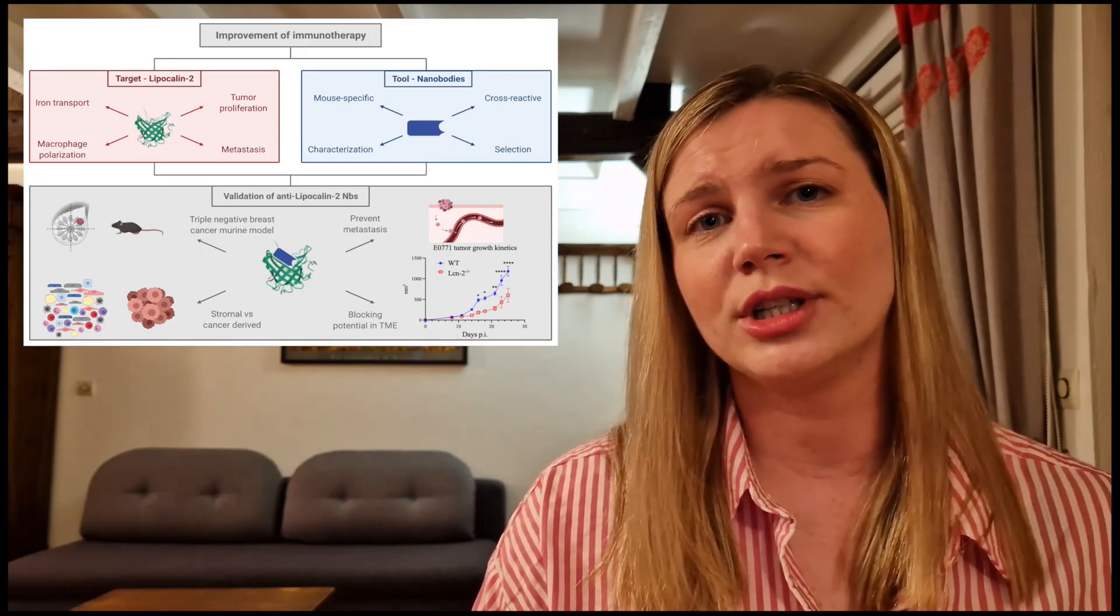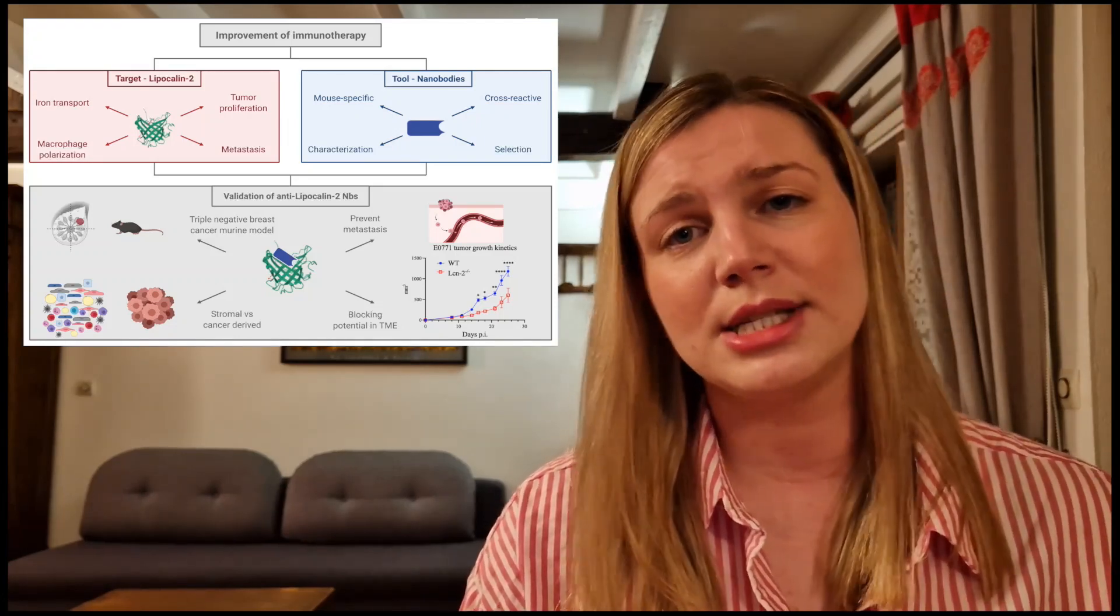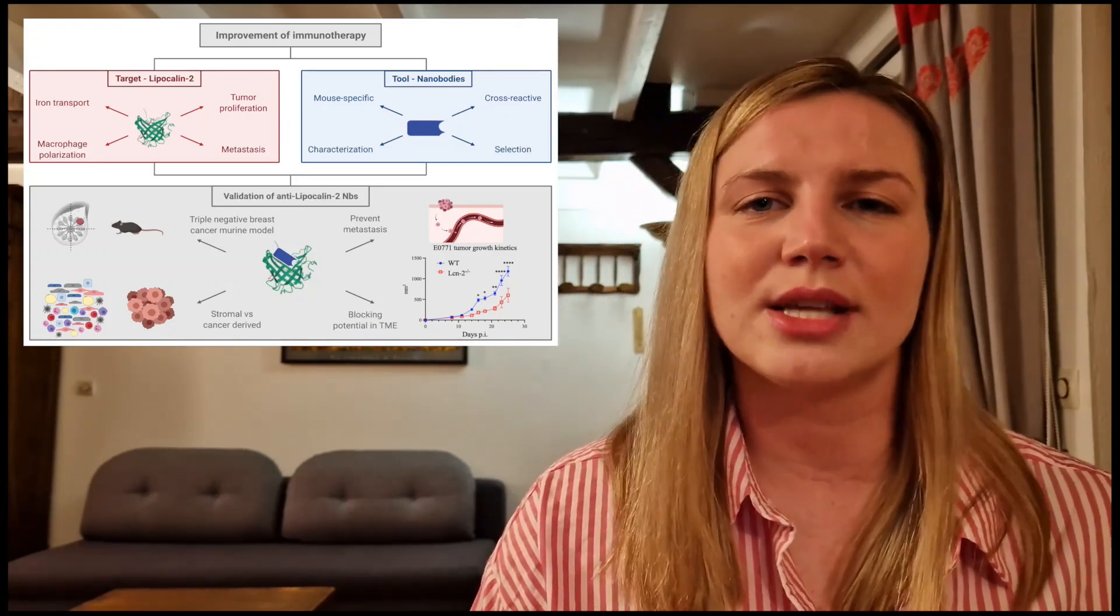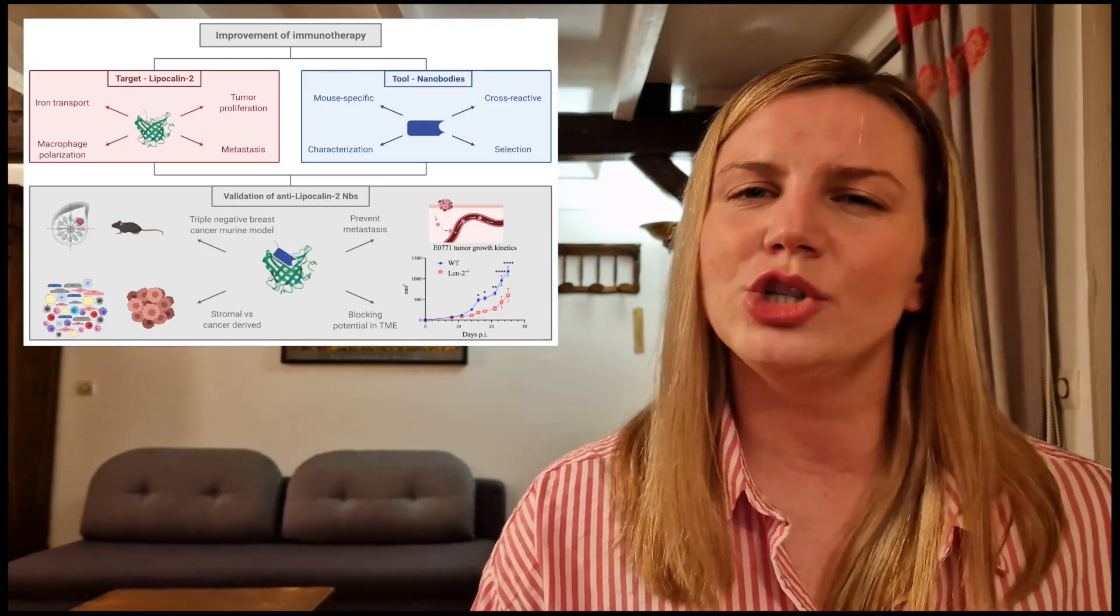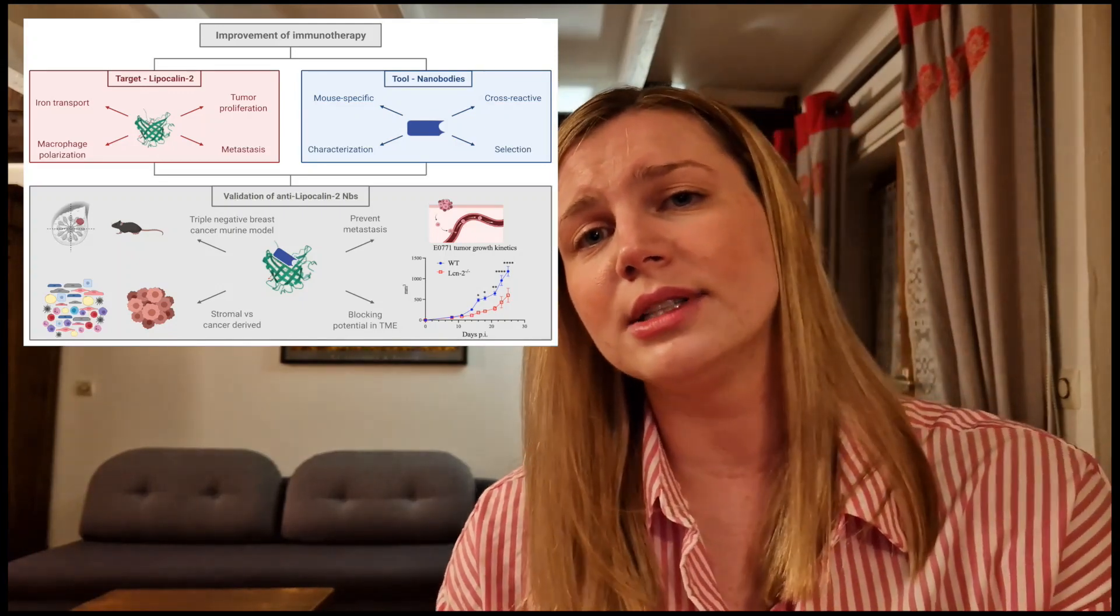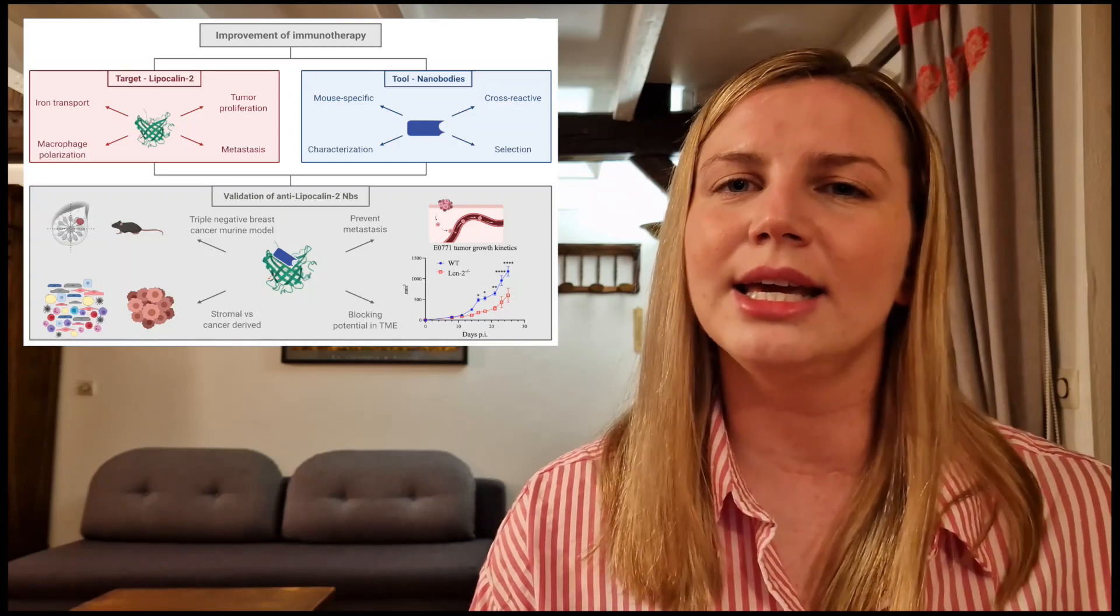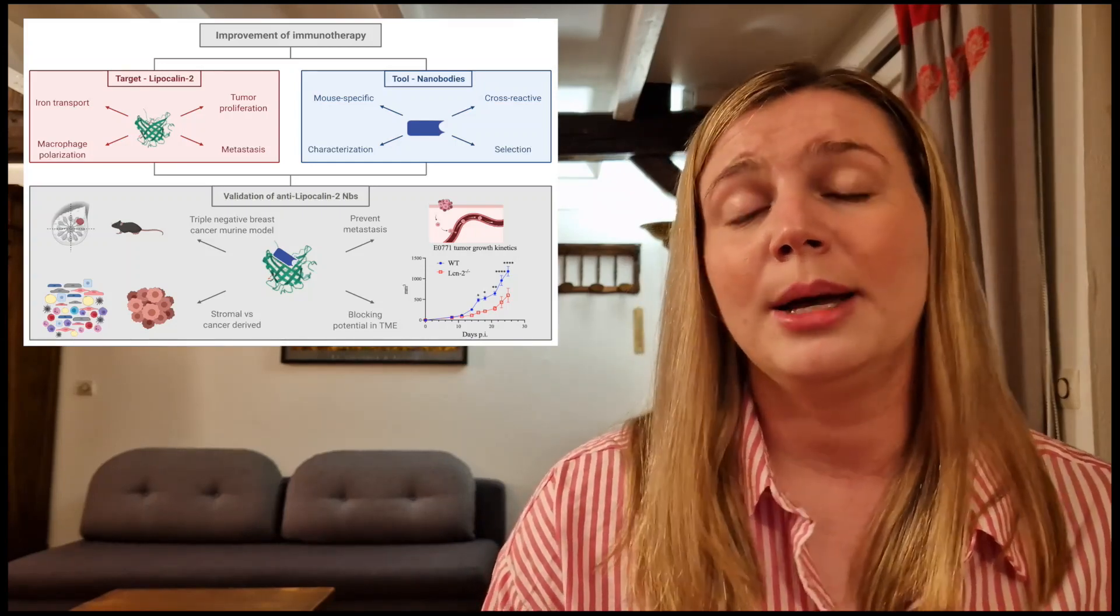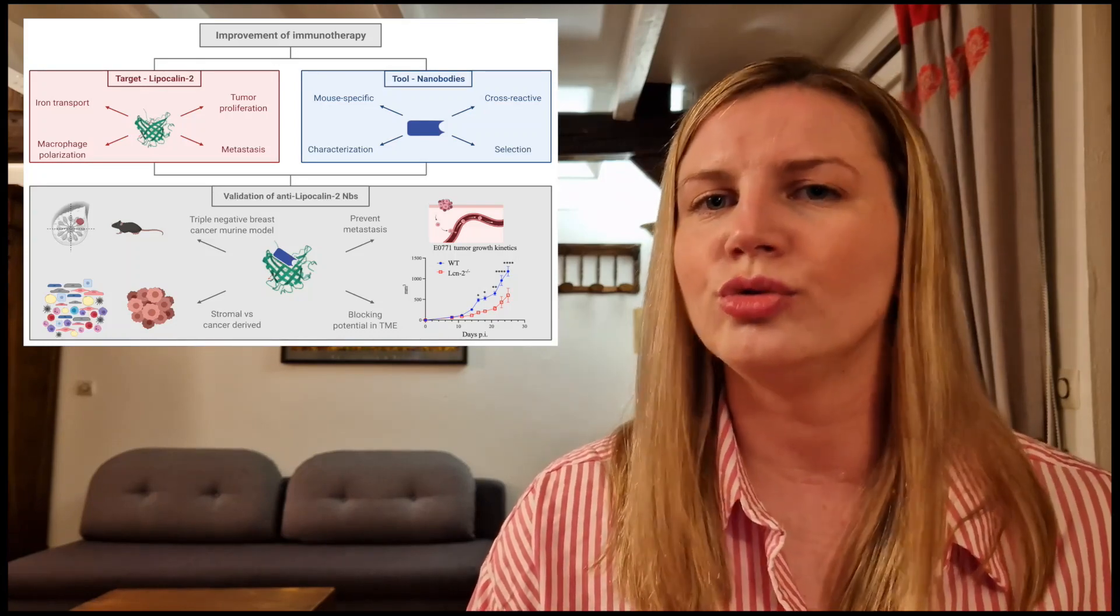In this project, we will focus on investigating the lipocalin-2 in primary murine TNBC model called E0771 and its metastatic LMB version. Interestingly, in this project, we have shown that there is a significant decrease in TNBC tumor growth in the mice lacking expression of lipocalin-2, meaning that systemic lipocalin-2 could highly contribute to tumor development.